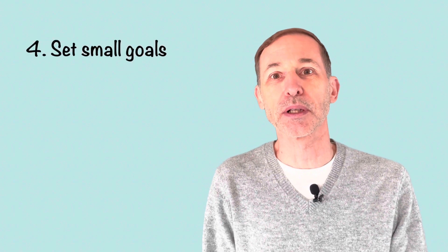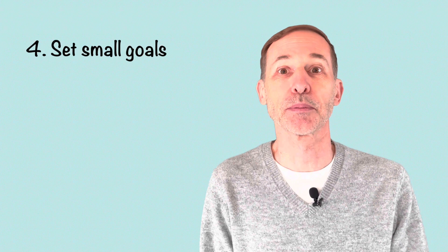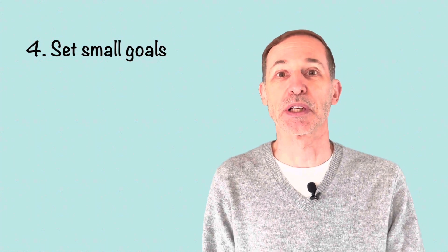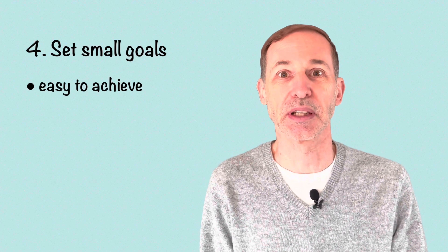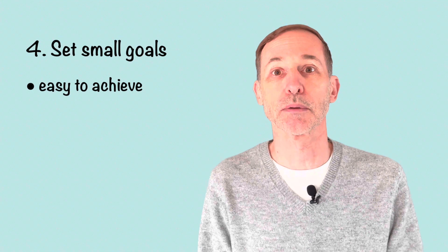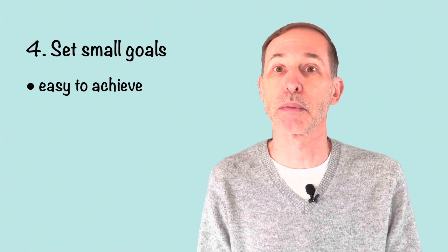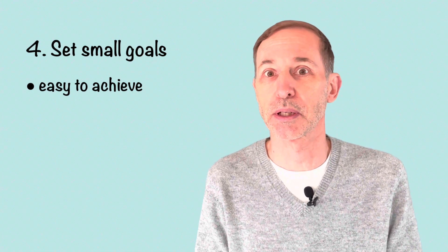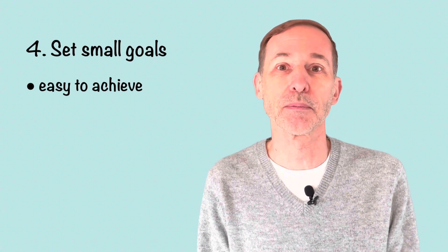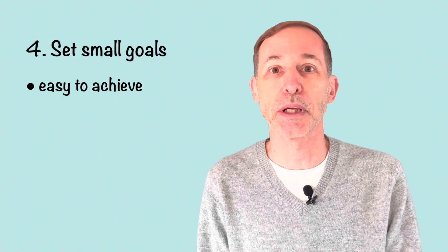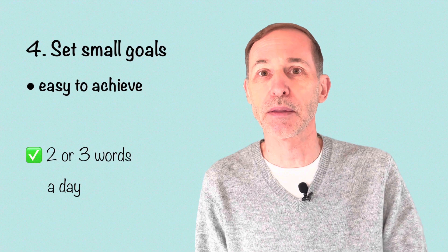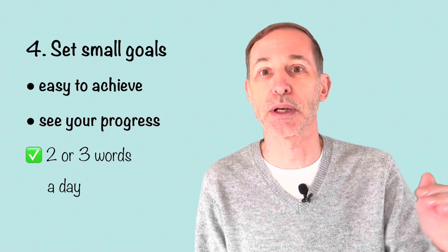Now in order to see your progress, it is important to set small goals. And these goals must be achievable goals, easily achievable goals. For example, you might have a long-term goal of learning vocabulary, learning maybe three or four thousand words. It's a lot. So it's really too difficult to think about that. So instead, take it step by step. So maybe learn two or three words a day or 10 or 20 words a week.